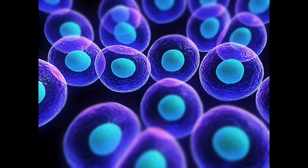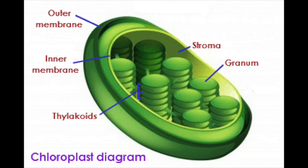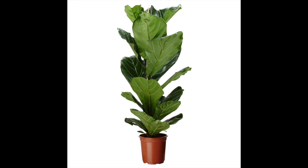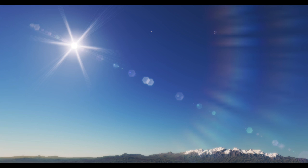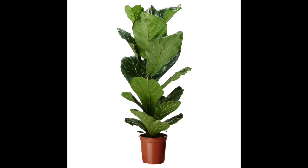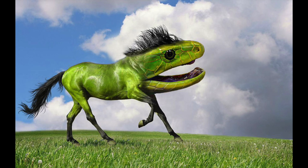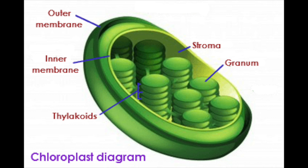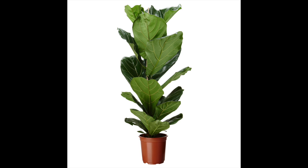A very important part of the cell is the chloroplast. The chloroplast is only found in plant cells. The reason for that is that it conducts photosynthesis. Photosynthesis is when a plant absorbs sunlight, which also causes the plant to turn green. There are not many green animals, and there is not a single animal that absorbs sunlight for its energy, so chloroplasts are only found in plant cells.